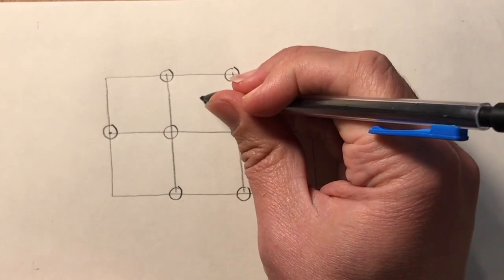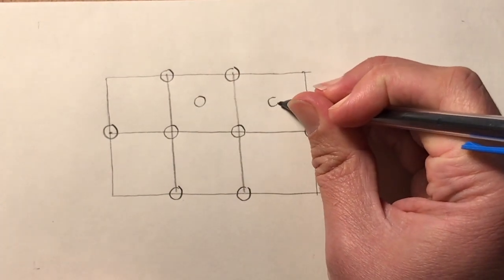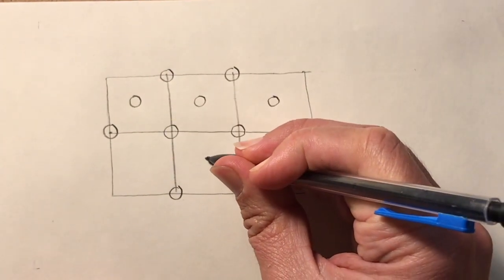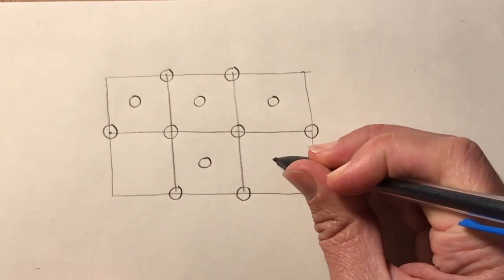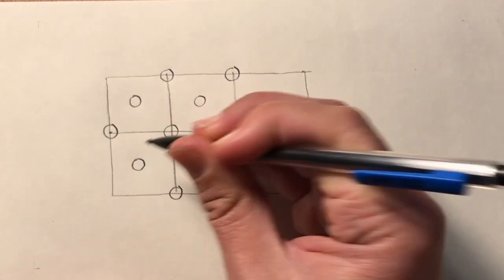Then we want to go into the center of each little square and make another circle. Again about the same size and there we are.